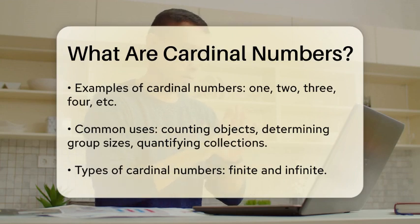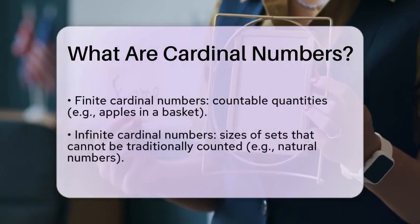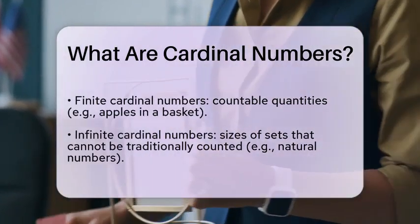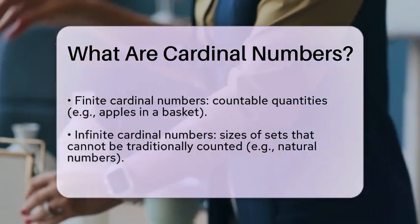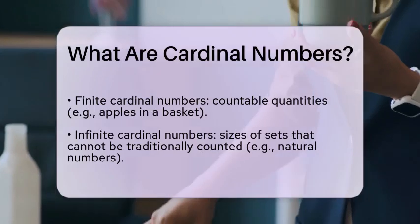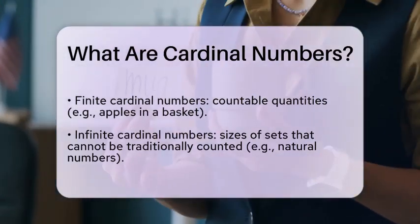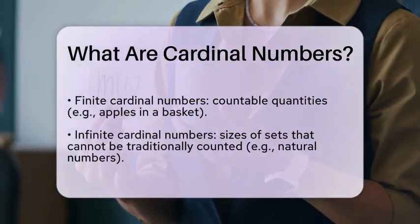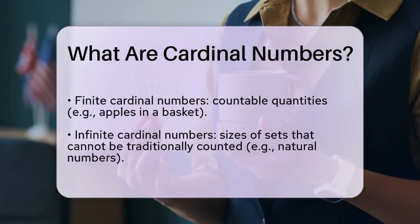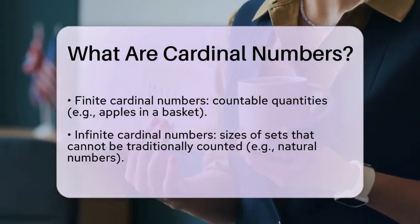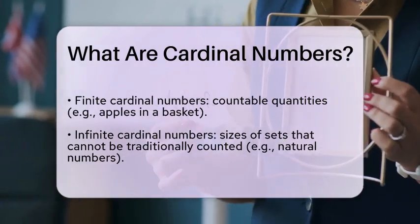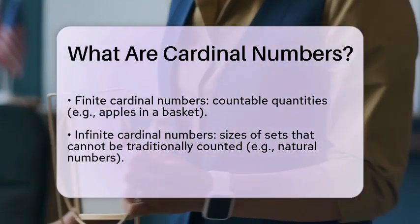In mathematics, cardinal numbers can be finite or infinite. Finite cardinal numbers are those that can be counted, like the number of apples in a basket. Infinite cardinal numbers, on the other hand, represent sizes of sets that cannot be counted in the traditional sense, such as the set of all natural numbers.